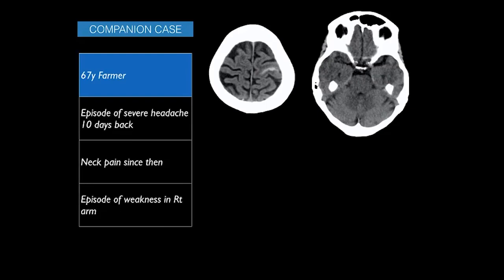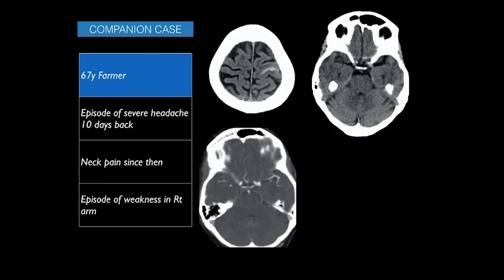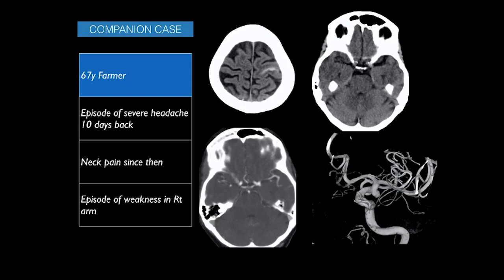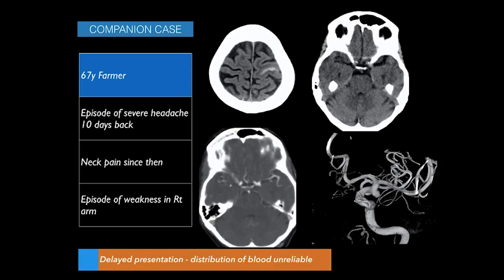A companion case: a 67-year-old farmer with severe headache 10 days prior, neck pain since then, and recent right arm weakness. Imaging showed bleeding along one frontal convexity sulcus only, with no blood in the suprasellar cistern. Suspicion of an aneurysm near the anterior clinoid process prompted CT angiogram, which confirmed a left PCOM aneurysm — a delayed presentation of acute aneurysmal subarachnoid bleed. In cases of delayed presentation, blood distribution is not reliable and an aneurysm must still be ruled out.